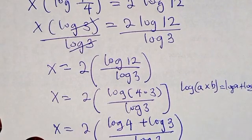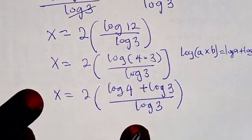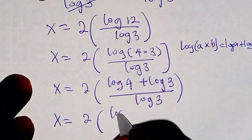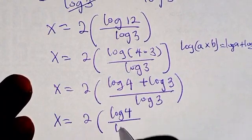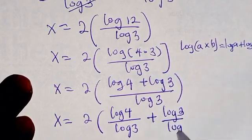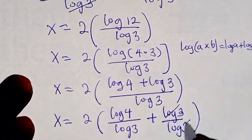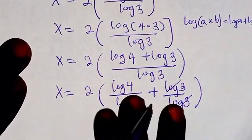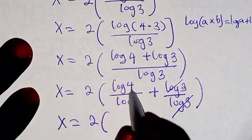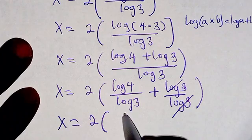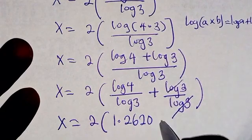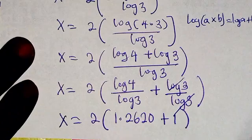We split this as log 4 divided by log 3 plus log 3 divided by log 3. Log 3 cancels log 3, leaving 1. So we have x equals 2 times the bracket log 4 divided by log 3, which is approximately 1.2620, plus 1.